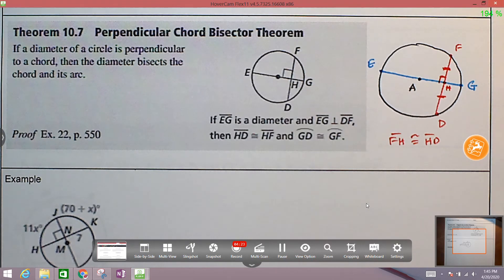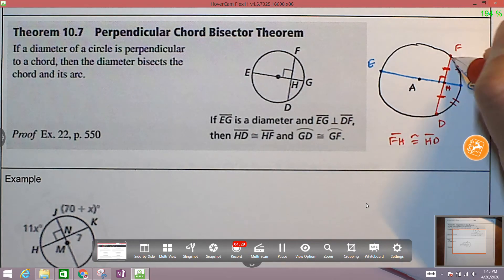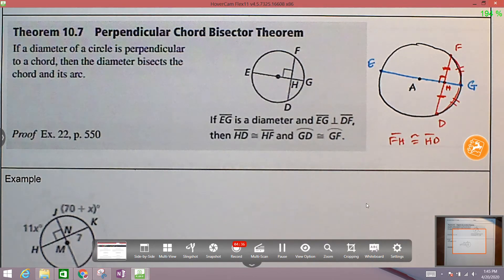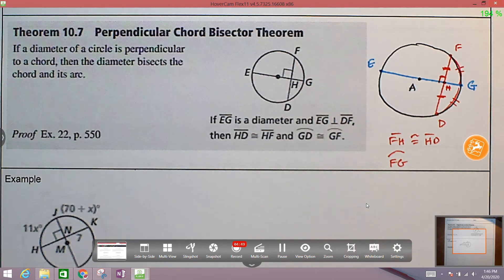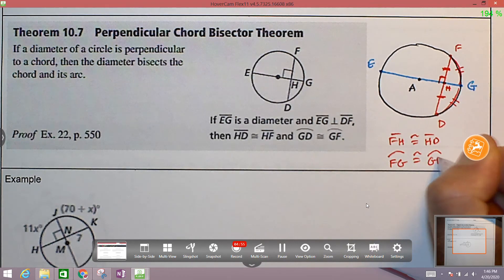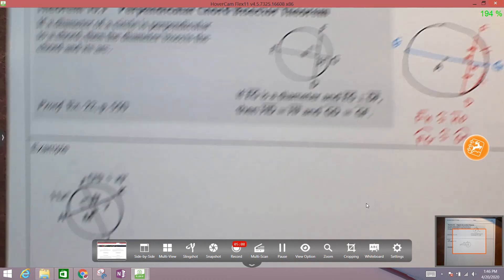The other thing that we can conclude is that this piece is congruent to this piece. This piece here is congruent to this piece here. So this piece here, it goes from F to G, and it's not a segment. It's curved. It's rounded. It's part of the circle. So that is an arc. Arc FG is congruent to arc GD. So those are the two things that we can conclude. So how do we use this? How do we apply this theorem in problem solving? So here's an example right here.